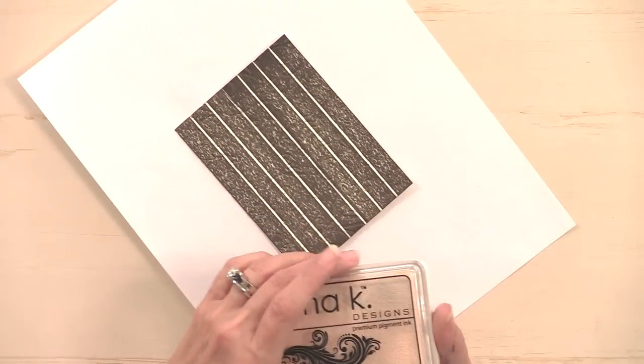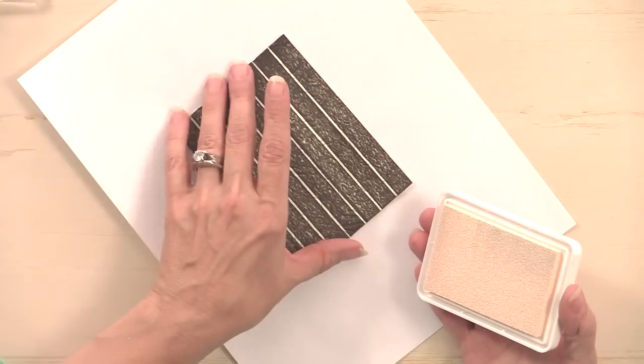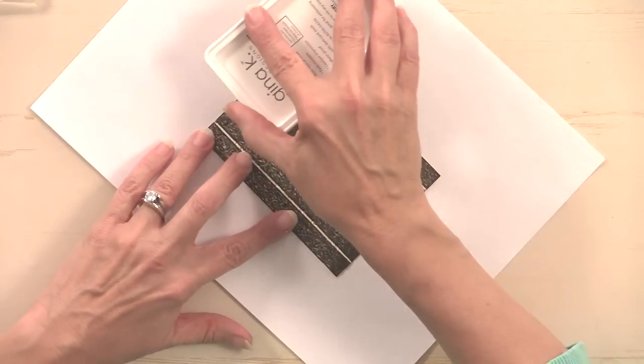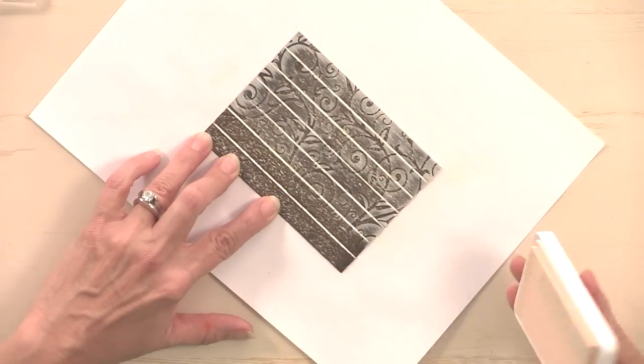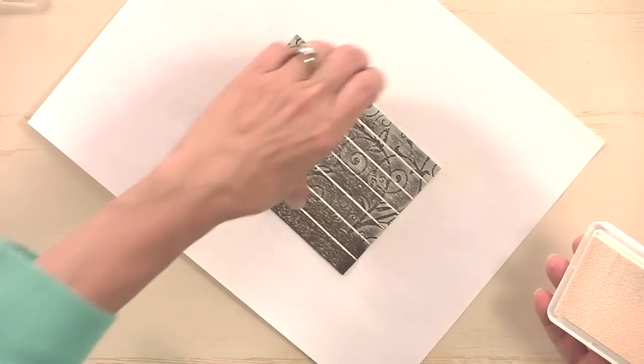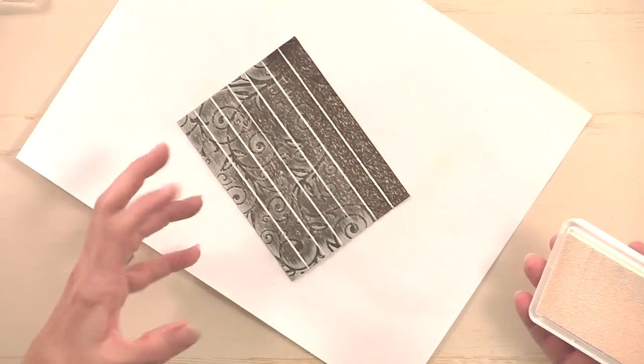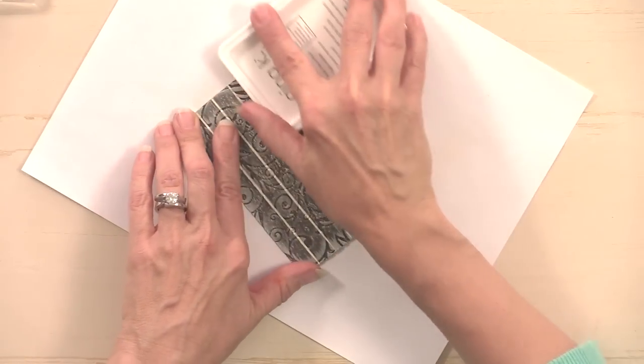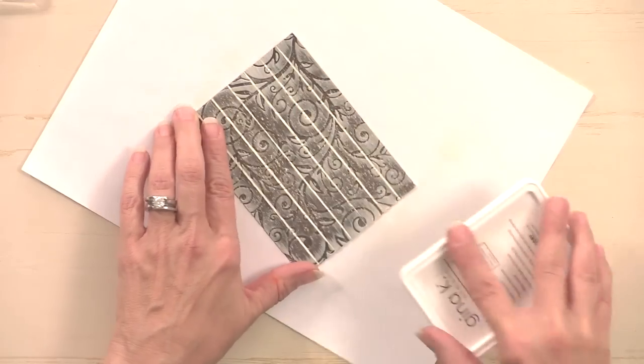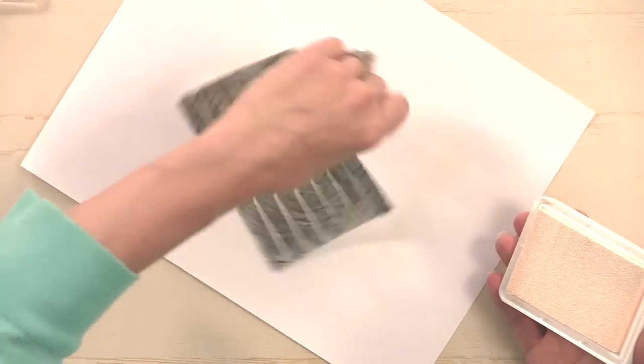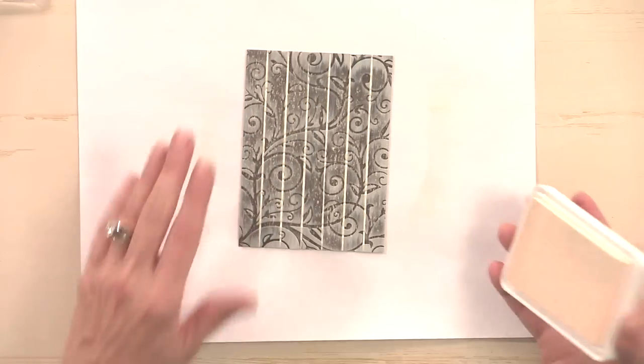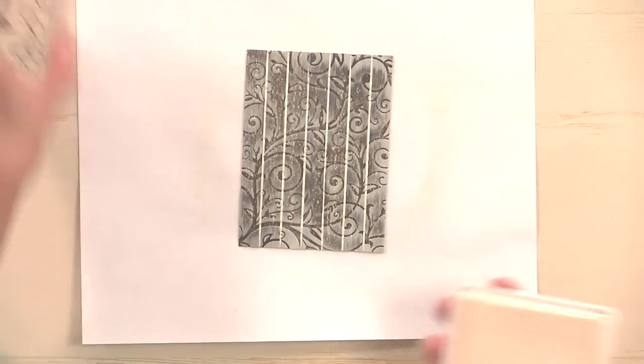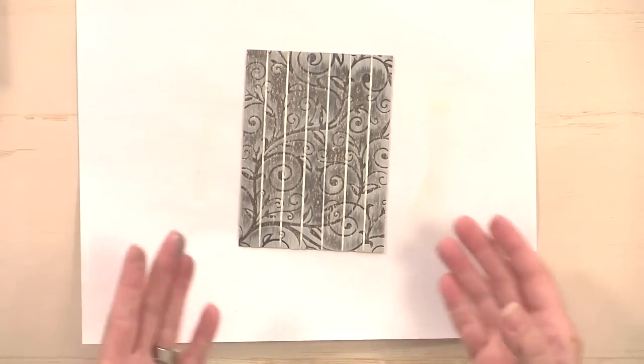I grabbed an ivory pigment ink pad, and then here's where the magic happens. I just ran it down, not too heavy, lightly over the surface. You see how it looks like carvings are in this piece of wood grained cardstock. Isn't that just the coolest thing? It looks so much like just aged wood that has beautiful carvings in it. That is how you do the carved wood technique.